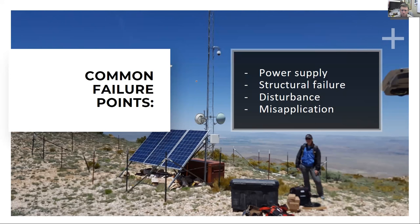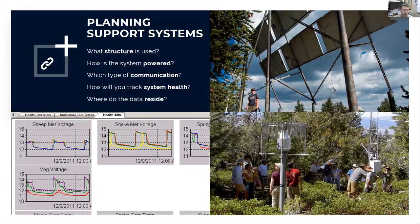When planning support systems, think about building the structure for the worst-case scenario — is that three meters of snow, or one meter? How are you going to power the system? Are you going to use solar power, small wind generators, or do you have line power available? What are the weak points in those systems and how do you adjust for that? What kind of communication can you use — burst satellite transmission, a graduate student with a flash card, your own wireless network, or cellular communications? It's always best to have two to three options on the table if you want to run a long-term network.